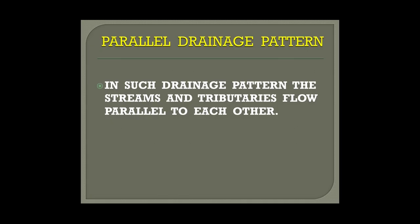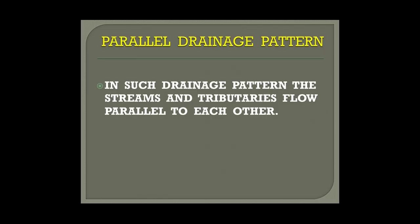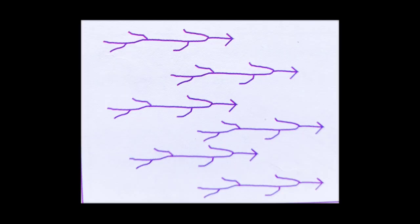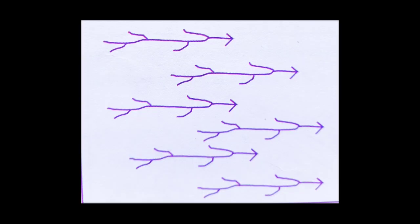The last is the parallel drainage pattern, where streams and tributaries flow parallel to each other. This typical kind of drainage is called the parallel drainage pattern. Thank you students — that's all for this module.